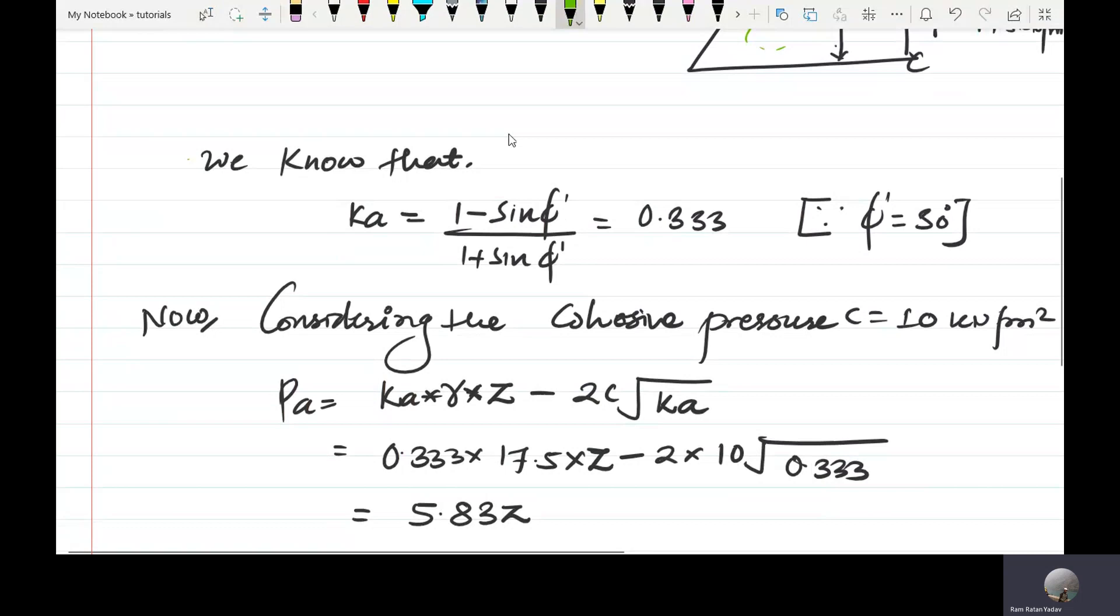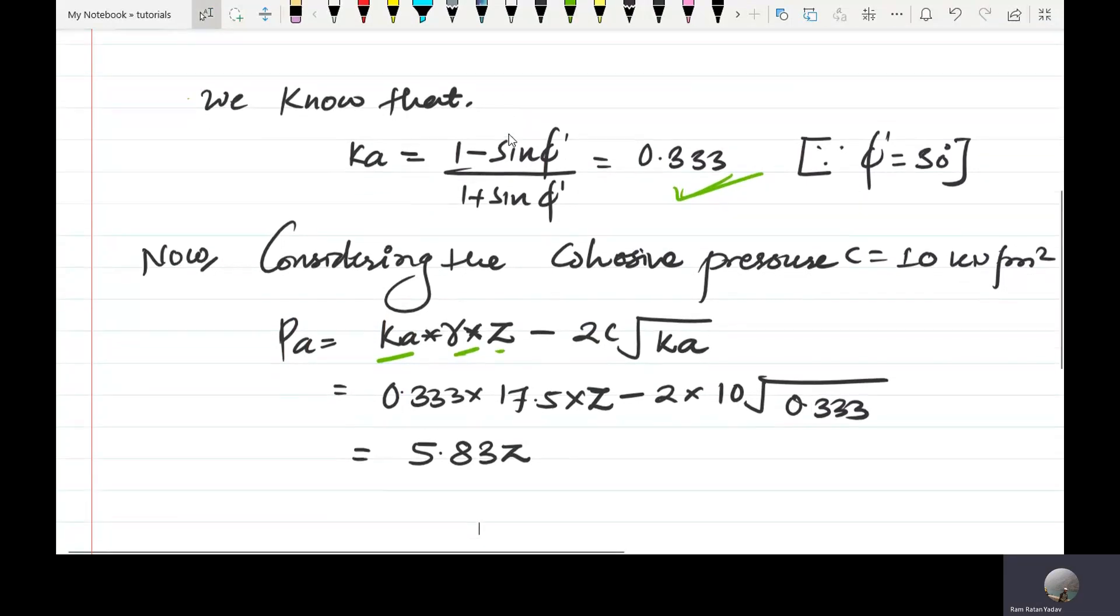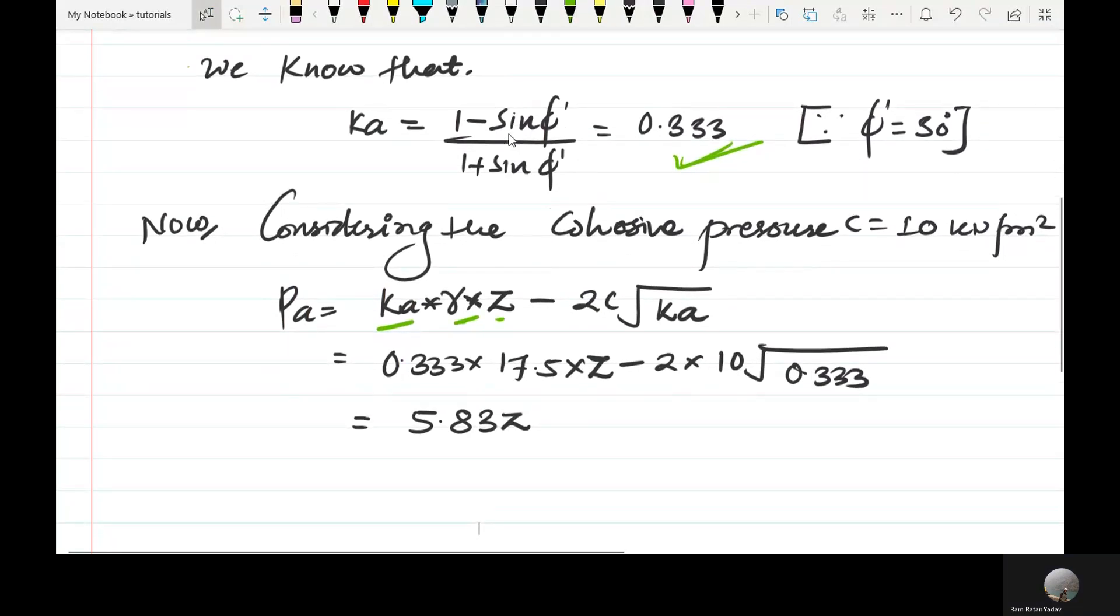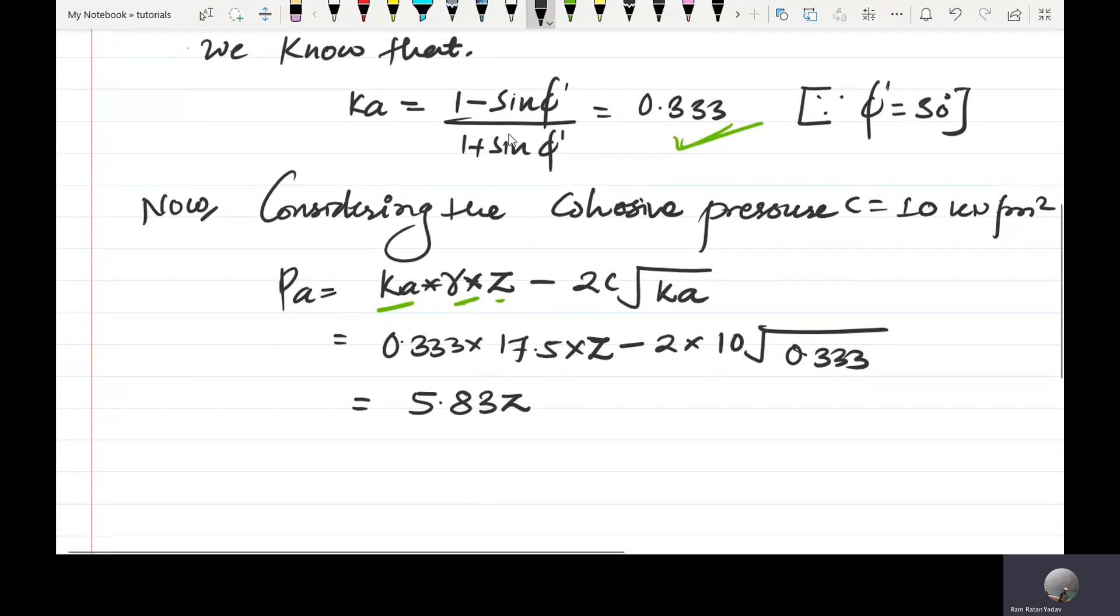K is equal to 1 minus sine phi, and considering the cohesive pressure c is equal to 10 kilonewton per meter square. The formula with the symbols.